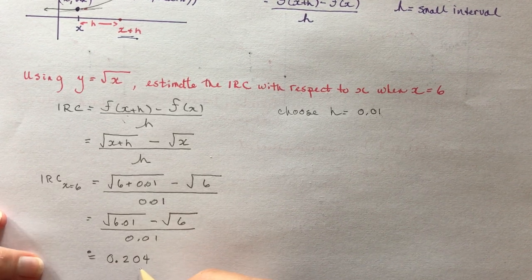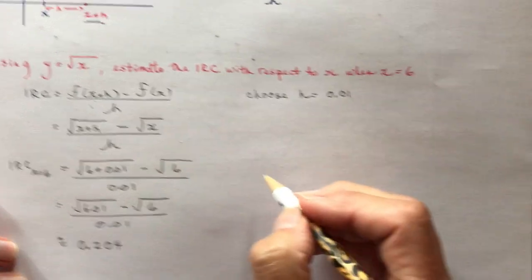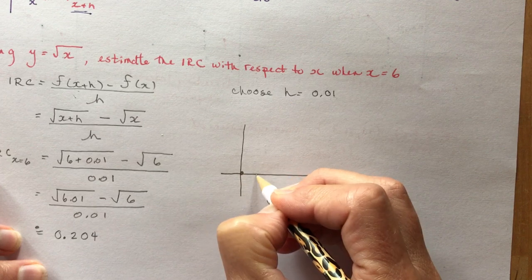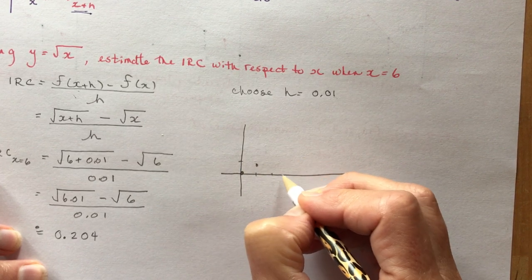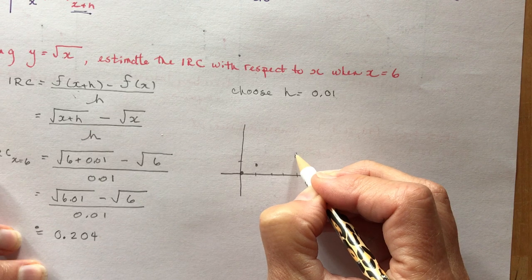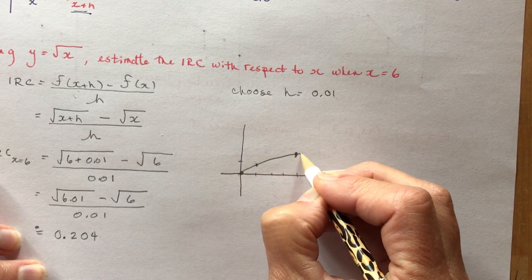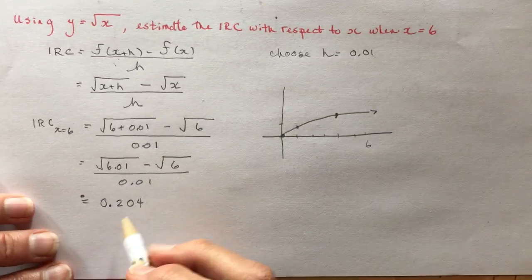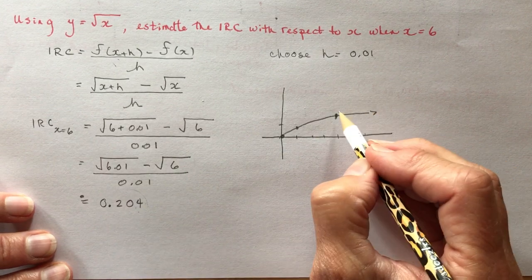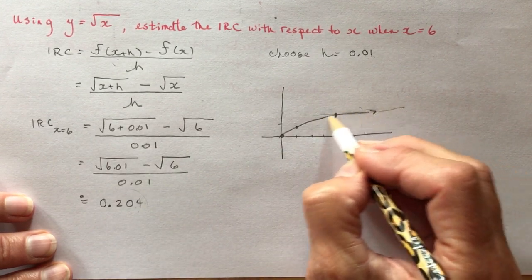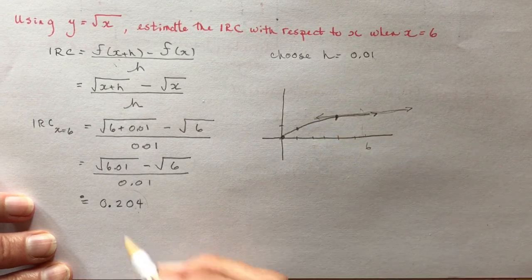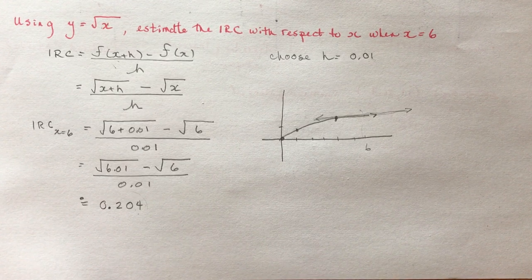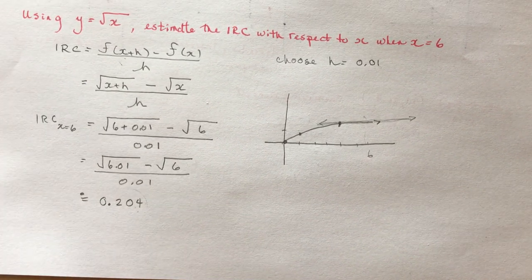That's the instantaneous rate of change. You can see it's small, but if you think of the graph of the square root of x, so you have 0.01 and 1, 2, 3, 4, and 2 maybe up there, your function's going like this, so it's pretty flat when you're out at 6. That makes sense that 0.204, that's the slope of the line at the point where x is 6. If I do a tangent line there, that would approximately be what this slope would be. That's your lesson in estimating instantaneous rate of change, and I hope you found it really helpful.